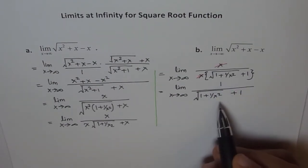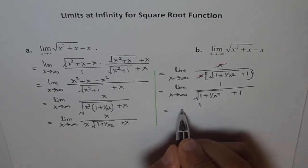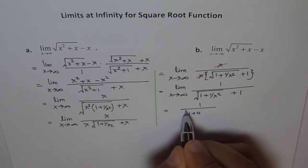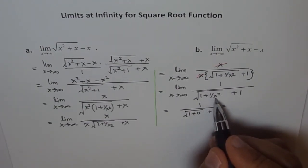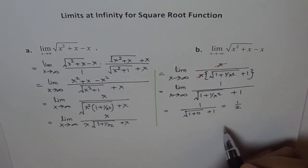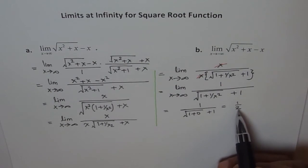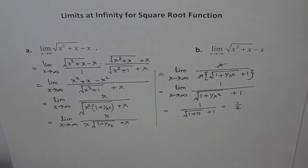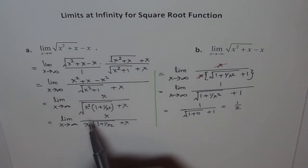Now I can substitute infinity for x. Since 1/x² approaches 0 as x goes to infinity, we get 1 over [sqrt(1 + 0) + 1], which equals 1 over [sqrt(1) + 1], which equals 1 over 2. So the limit of this function is 1/2 when x approaches positive infinity. We successfully solved the first part.